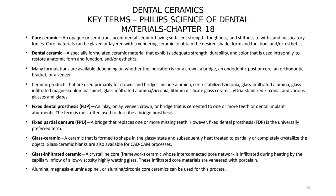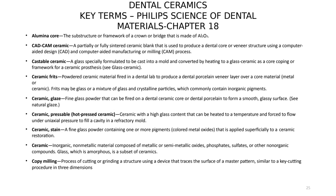The alumina core structure can also be used for different types of fixed restorations such as crowns and bridges. CAD-CAM ceramics are partially or fully sintered ceramic blanks that are milled to the design completed using the digital process. Castable ceramics is a glass specially formulated to be cast into a mold and converted by heating into a glass ceramic as a core coping framework or ceramic prosthesis — similar in concept to porcelain fused to metal, but using ceramics instead of metal.